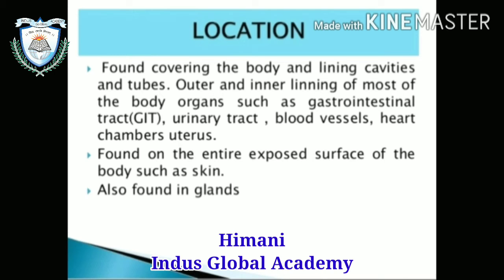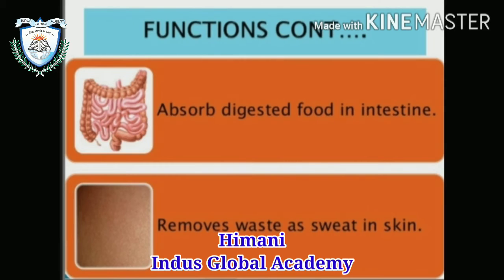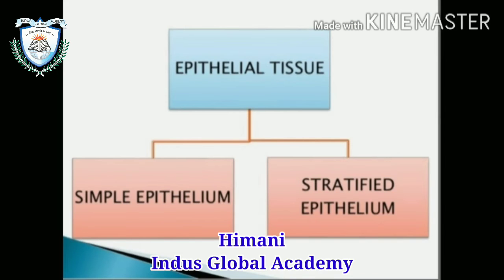Epithelial tissue is also found lining blood vessels, the urinary tract, heart chambers, and the uterus. It covers the entire exposed surface of the body, such as the skin, and is also found in glands. Functions: it plays a role in defense and protects body organs; it secretes gastric juice in the stomach to help in digestion; it absorbs digested food in the intestine; and it removes waste in the form of sweat from the skin.